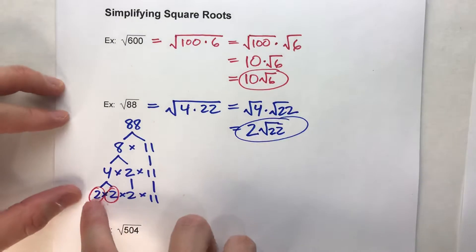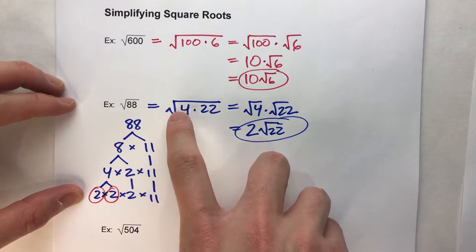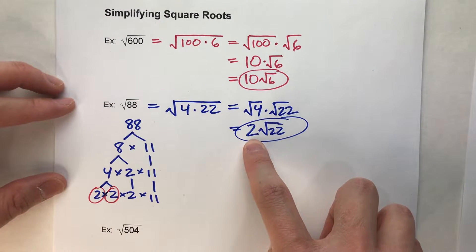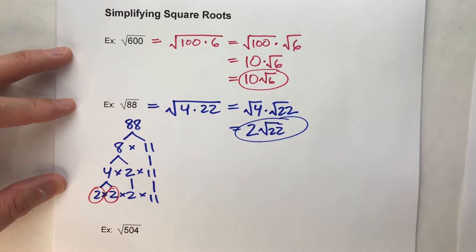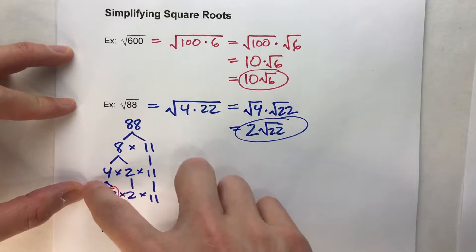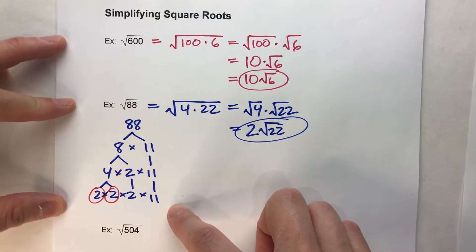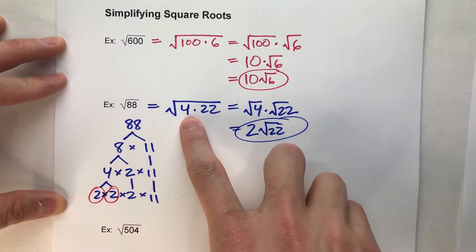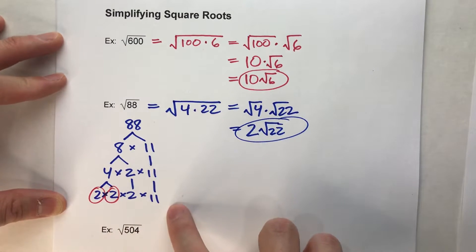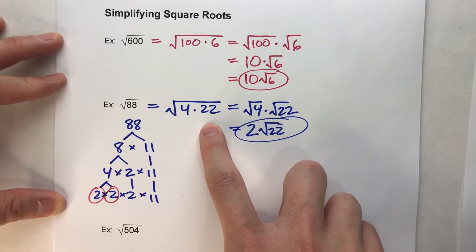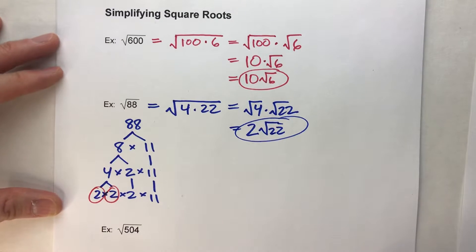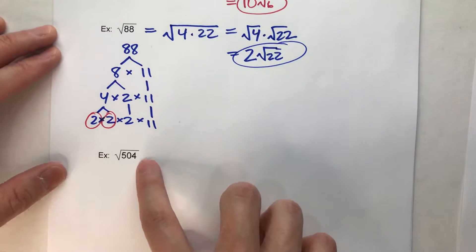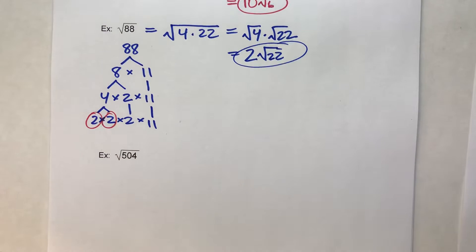It will always be the case that if you multiply the pairs, you will always get a square root that comes out as a whole number — always. Notice in this case there was only one pair. It's possible for there to be multiple pairs; in that case, you multiply all the pairs together to get that first number, and multiply all the leftovers together to get the last number. So let's do one more, and this will be the hardest one of the three: the square root of 504.